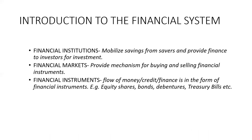A financial instrument is a financial claim, which also forms part of the components of the financial system. Funds flow from savers to investors in the form of financial instruments, which vary depending on their maturity — they can be long term or short term, and can be in the form of primary or secondary instruments. Some examples of financial instruments include equity shares, bonds, debentures, treasury bills, etc. These are all financial instruments traded in the financial market and handled by financial institutions.